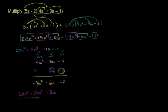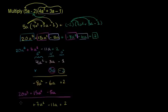Now we just add it all up. 2 plus nothing is 2. Negative 6a minus 5a is negative 11a. Negative 8a squared plus 15a squared is 7a squared. And then we have 20a to the third. We get the exact same answer because we really just did the same thing, just written in a different way.